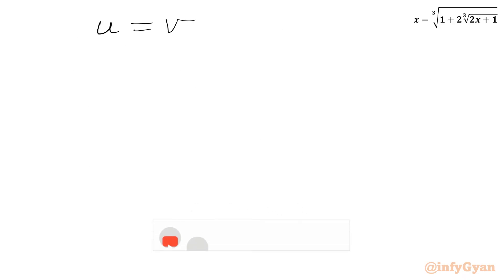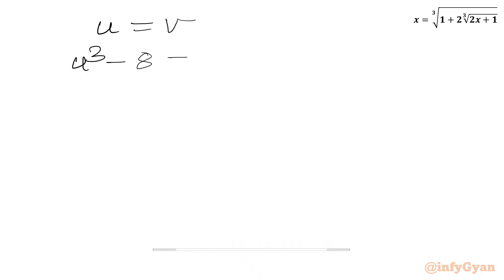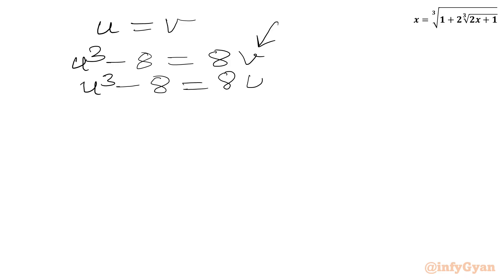We accept U equal to V only. Substituting V equal to U into the first equation: U cube minus 8 equals 8 times U, or equivalently U cube minus 8U minus 8 equals 0.